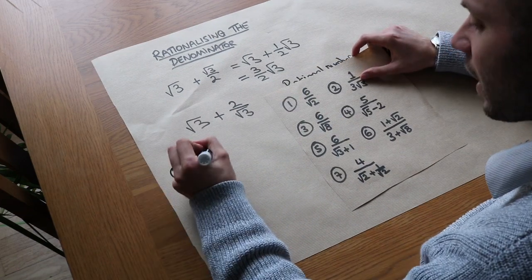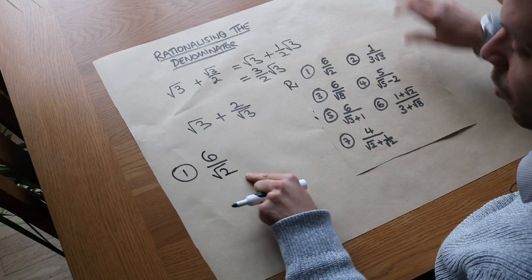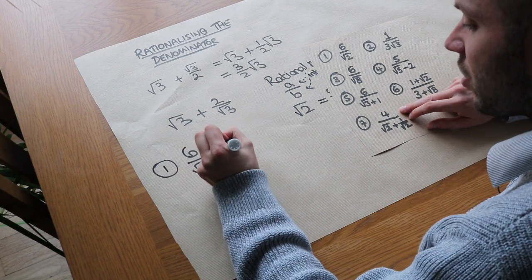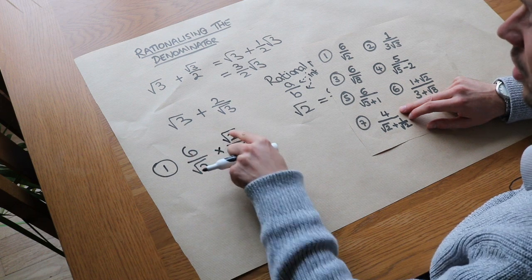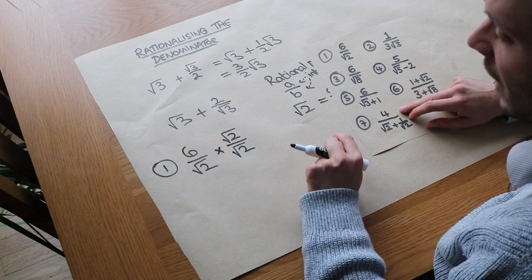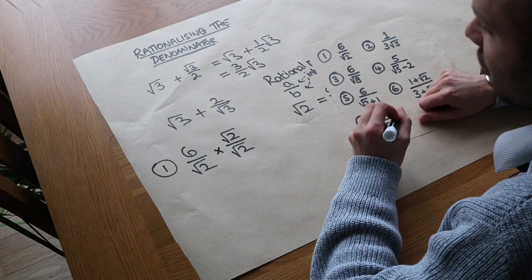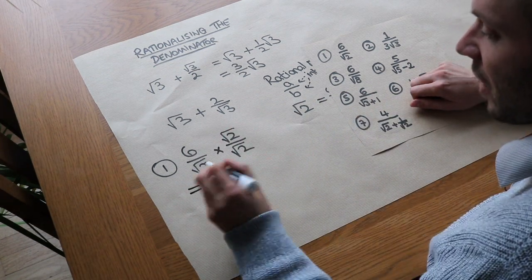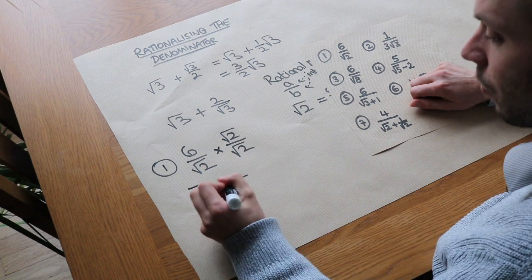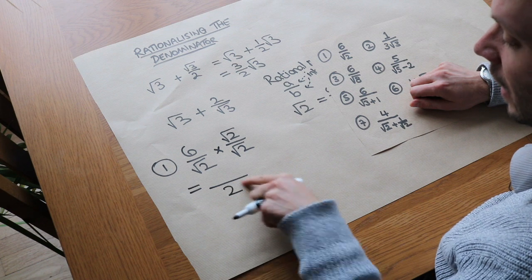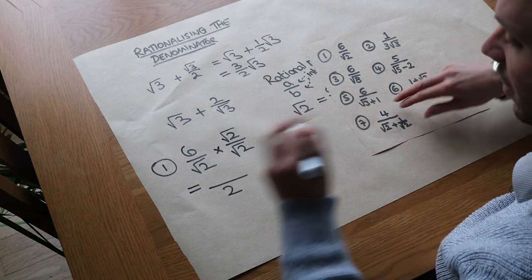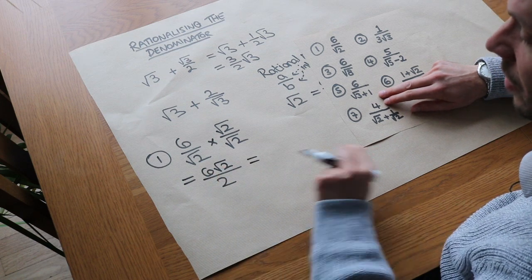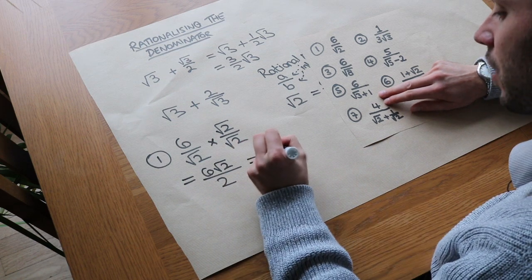If we had 6 over root 2, we want to rationalize the denominator. The trick is to multiply top and bottom of the fraction by root 2. Multiplying top and bottom by the same amount doesn't change the value — just as multiplying a half's top and bottom by 3 gives 3 over 6. In the denominator we then have root 2 times root 2 which is just 2, so it's no longer a surd. We have rationalized the denominator. And 6 times root 2 is 6 root 2, which simplifies to 3 root 2.